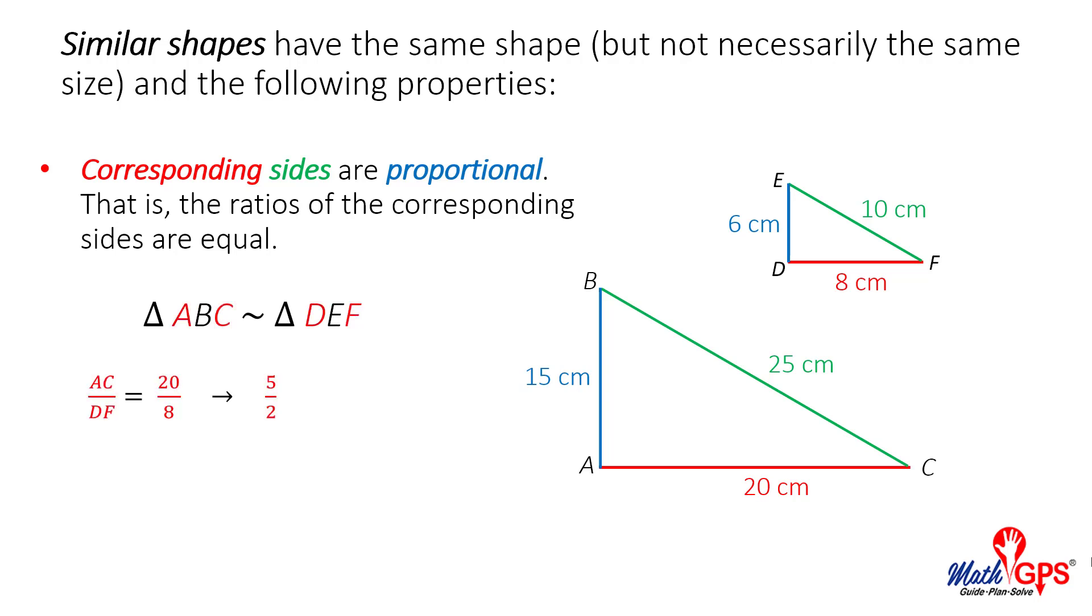Finally, consider side AC of the larger triangle and corresponding side DF of the smaller triangle. The similarity statement shows the line segment endpoints in the same positions as shown in red. The side lengths can be written as the ratio 20 over 8. If we simplify the ratio, it is renamed 5 over 2.